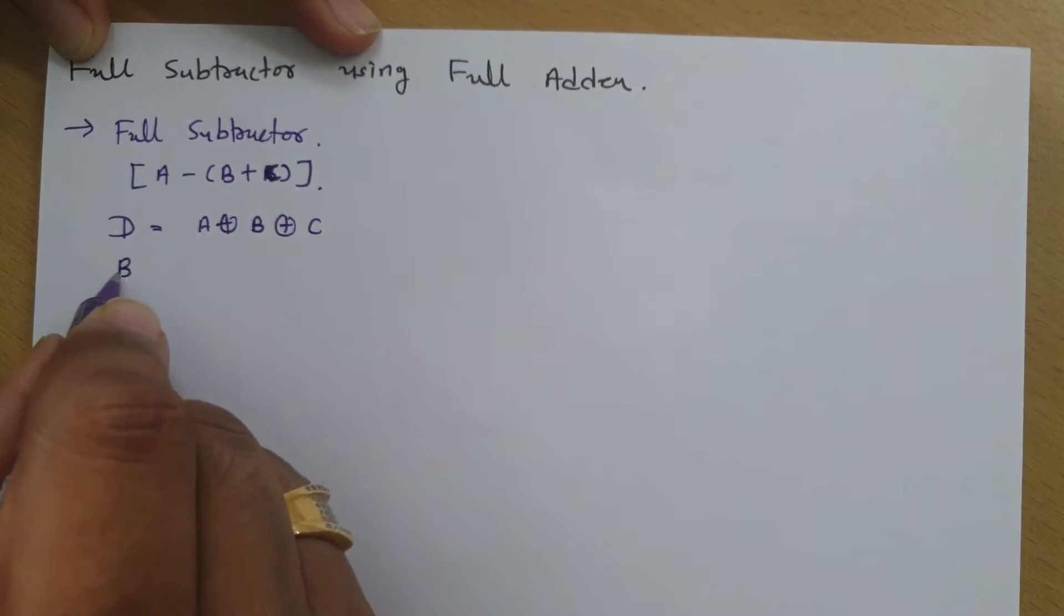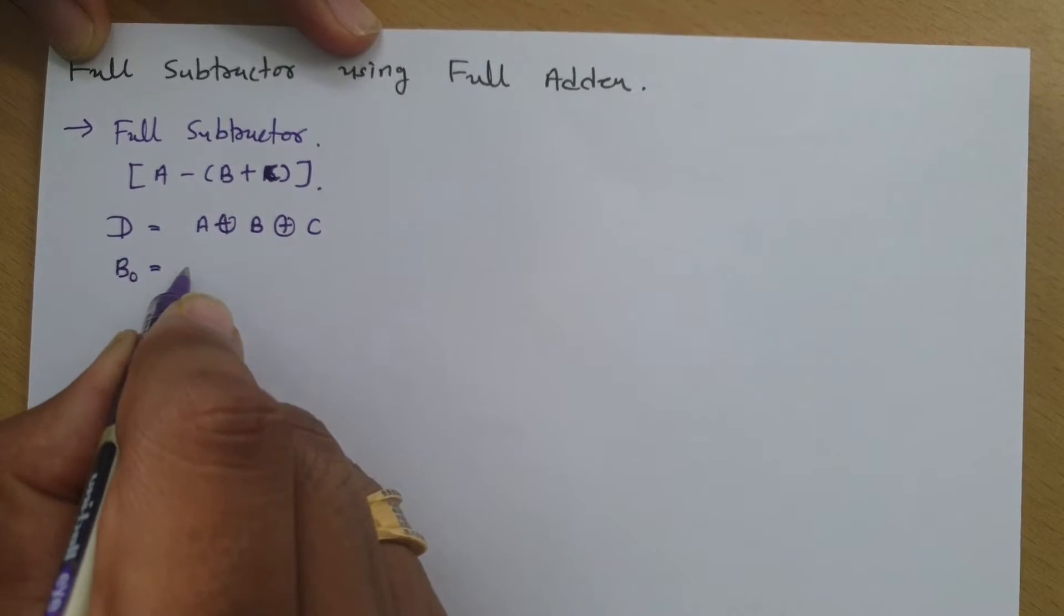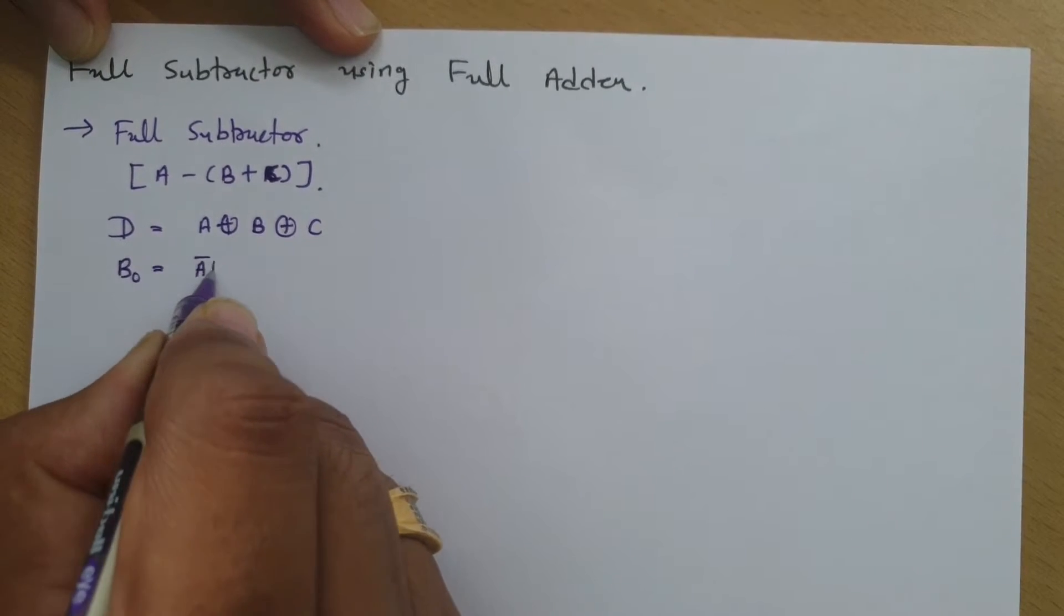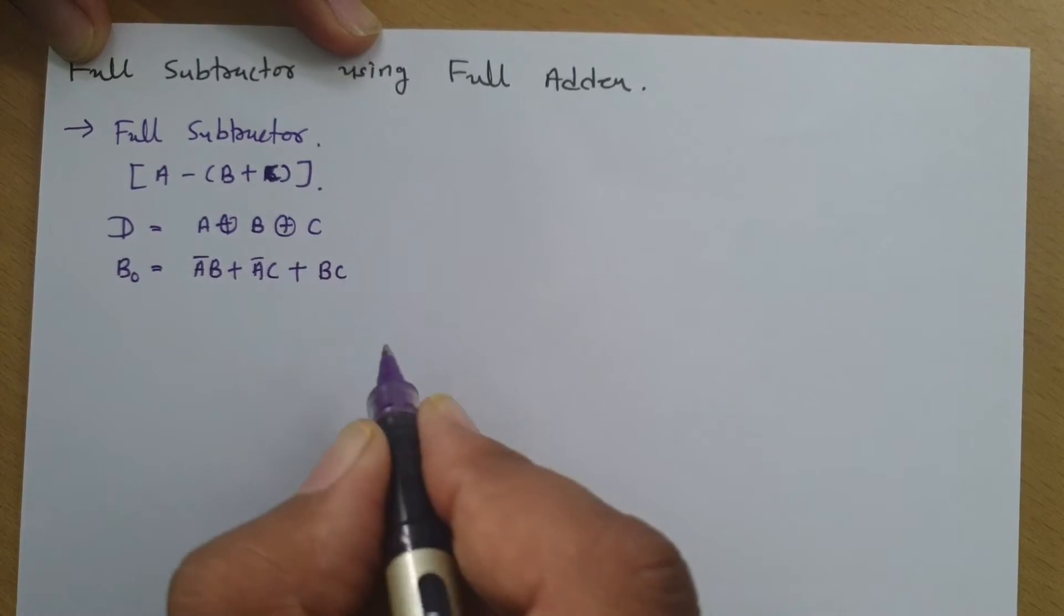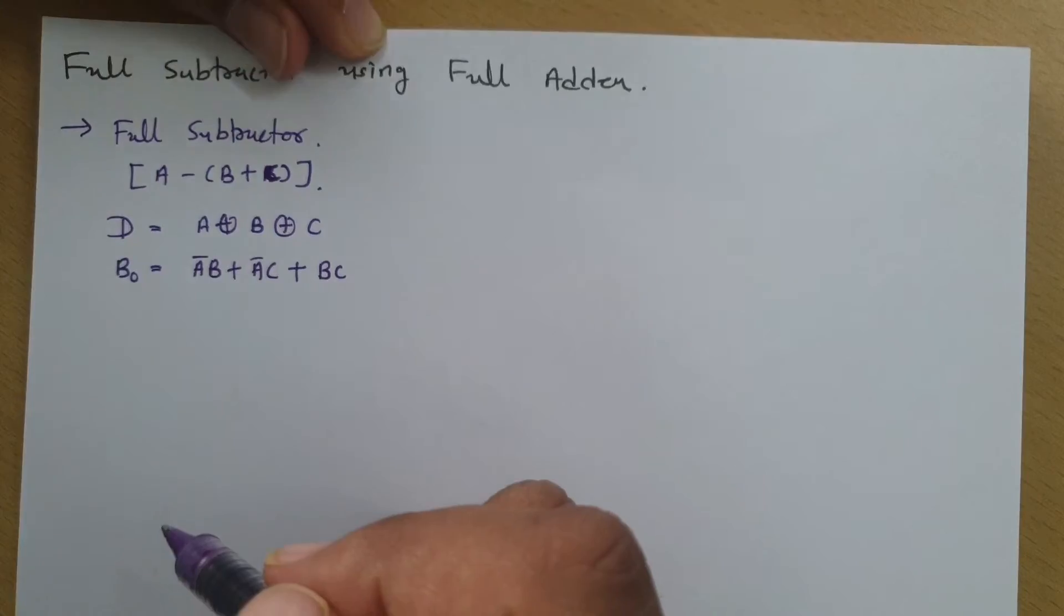And we can say borrow that will be A bar B plus A bar C plus BC. So this is the full subtractor circuit.